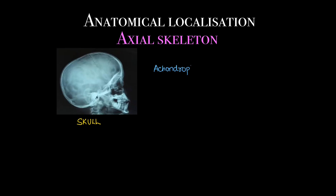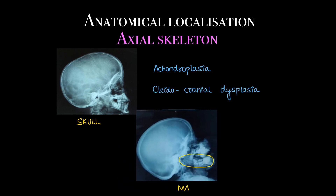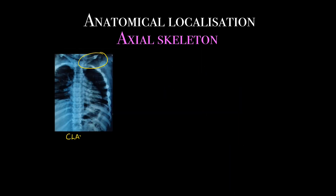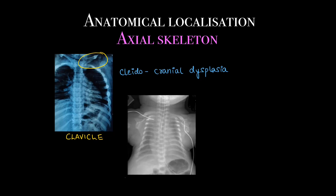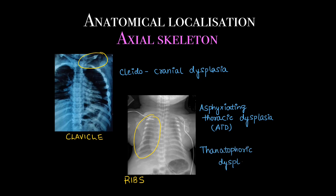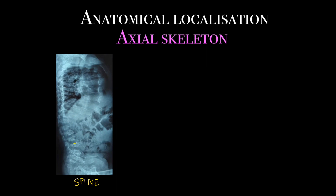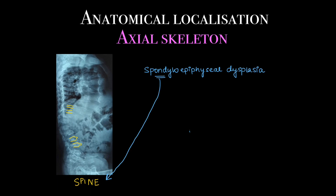Coming to the axial skeleton — what dysplasia can involve it? In case of skull involvement, there is achondroplasia and cleidocranial dysplasia. In case of mandible involvement, it is involved in pycnodysostosis. Clavicle is involved in conditions like cleidocranial dysplasia, where 'cleido' literally means clavicle. Ribs can be involved in asphyxiating thoracic dysplasia, also called ATD, or thanatophoric dysplasia. Spine can be involved in the form of beaking or platyspondyly, seen in conditions like spondyloepiphyseal dysplasia and mucopolysaccharidosis.